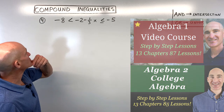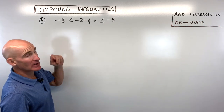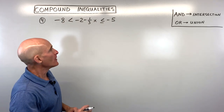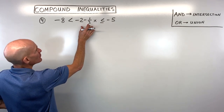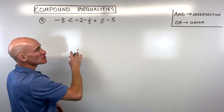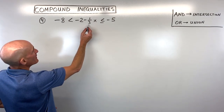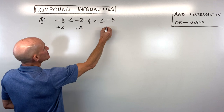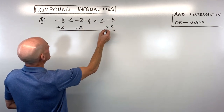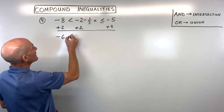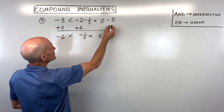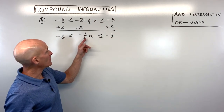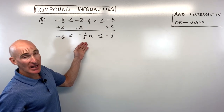For example 4, which is an 'and' type, there's another approach: get the variable by itself in the middle, solving both inequalities simultaneously. We add 2 to the left, middle, and right, giving negative 6 is less than negative one-third x is less than or equal to negative 3.